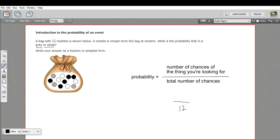What do we put on the top? Well, the thing we're looking for is a gray or a white marble. So we need to count all the gray and white marbles. One, two, three, four, five, six, seven. So there are seven of these marbles. Seven out of the 12 are gray or white, so we put seven on top.